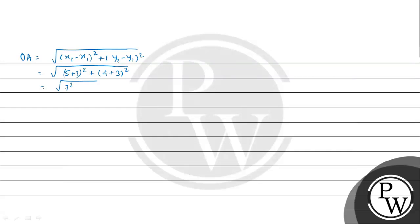This is √(7² + 7²) = √98 = 7√2. So the center is (-2, -3) and radius OA is 7√2.